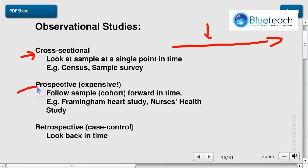Observational studies can also be prospective. For example, you give a drug to someone for 10 years and you try to see what happens. You follow a sample called a cohort in that type of study. It's expensive because you have to keep observing the data for a very long time.